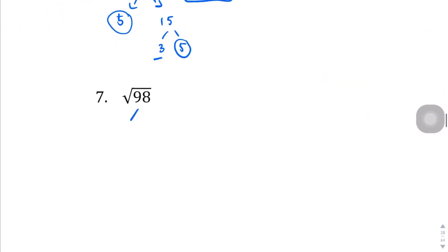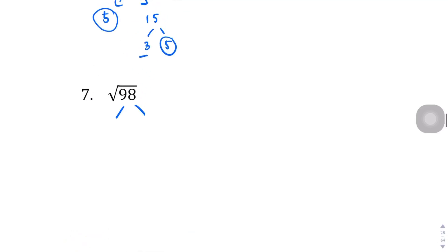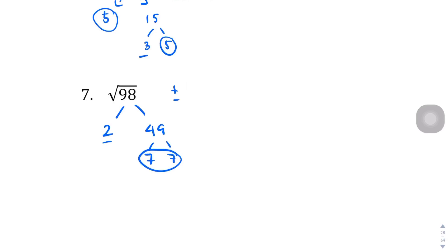Question number 7: we can break this down into 2 and 49. 49 breaks down to 7 and 7, so the 7 pair comes out and the 2 stays inside. So plus or minus 7 square root of 2.